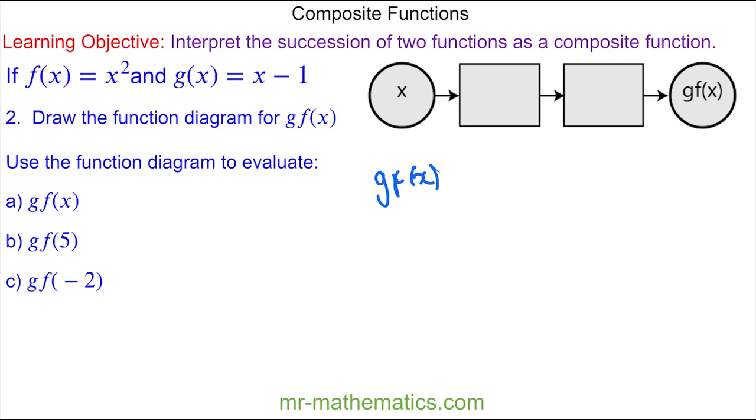To begin with, we're putting f of x into g of x. So f of x goes first, and this is x squared, and this goes into g of x, which is x minus 1. So we're putting x squared in place of x. So we have x squared minus 1.